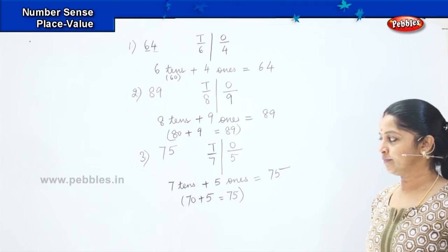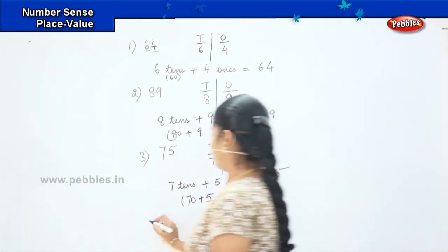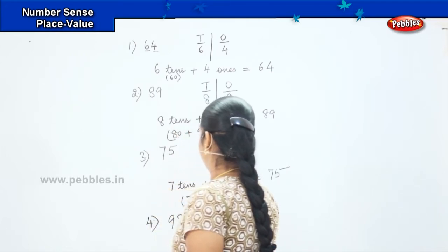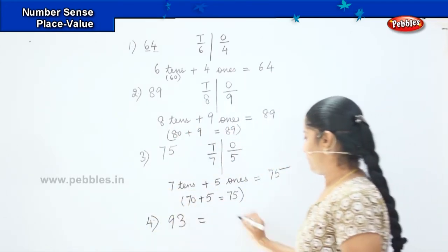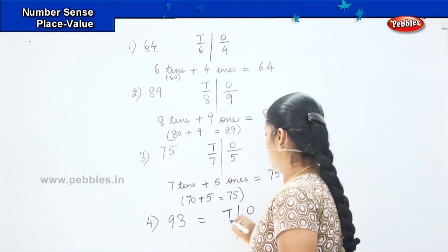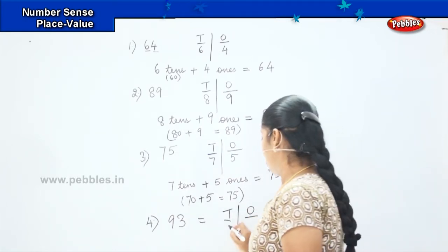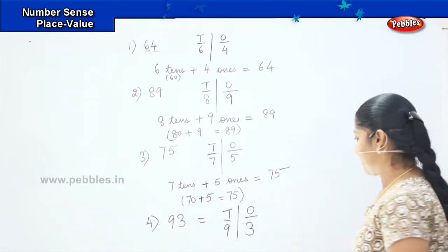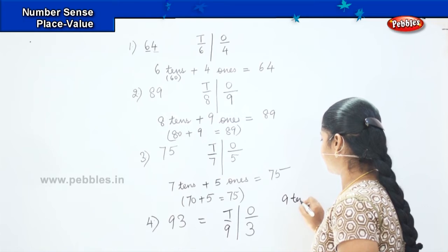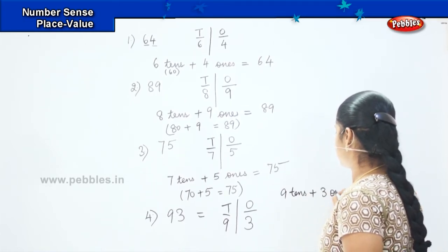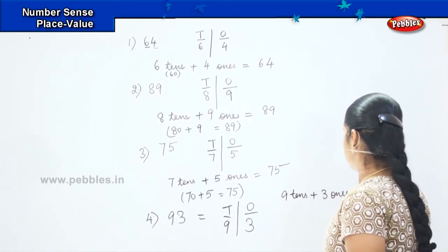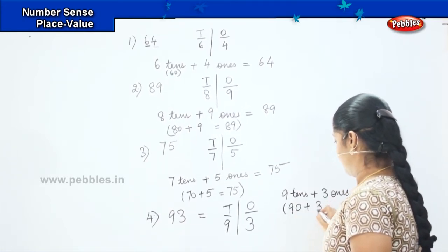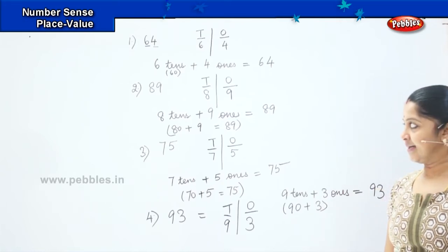Is it clear? Shall we do the last one one more time? How will you write ninety-three? What is the first step? T, O. Then how many tens? Nine tens, three ones. Nine tens plus three ones equals to ninety-three, where nine tens denotes ninety and three ones denotes three. Is it clear, children?